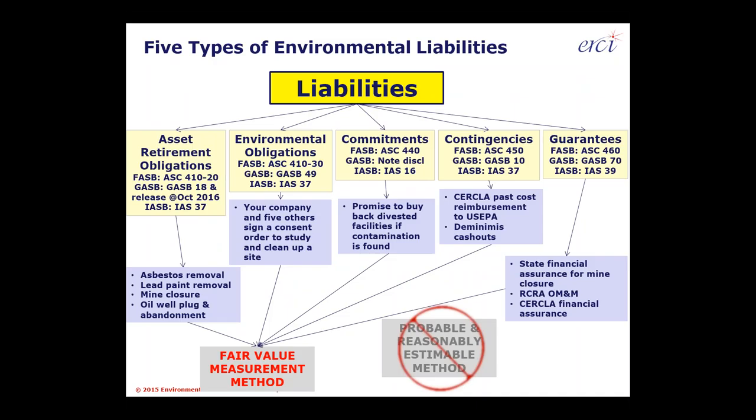There are five different types of environmental liabilities that we see at ERCI. First, moving left to right, asset retirement obligations continue to be the most significant and quickest growing — everything from asbestos removal to lead-based paint removal, mine closure, oil well plug and abandonment, and power plant decommissioning costs. They tend to be high-dollar ticket items.